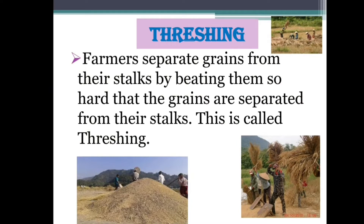Threshing is done mostly during the time of harvesting crops. Grains are the harvested seeds of grasses such as wheat, millet, rice and so on. The stalks — that is, the main stem of the grains — once harvested, are dried. Then the grain is separated from the stalks and ground.